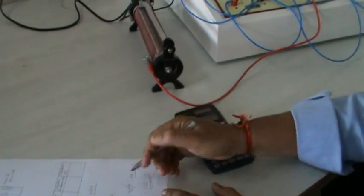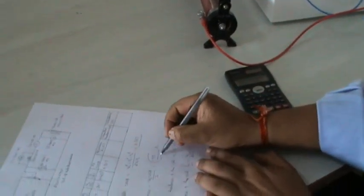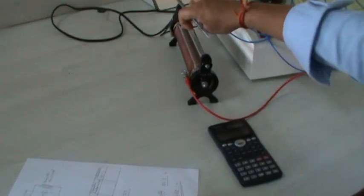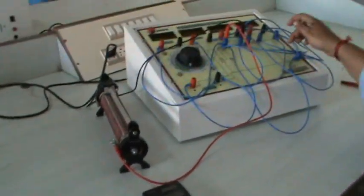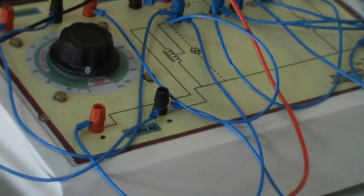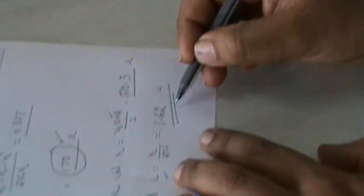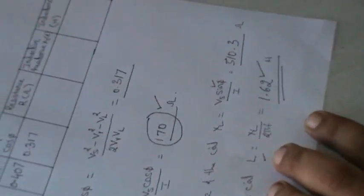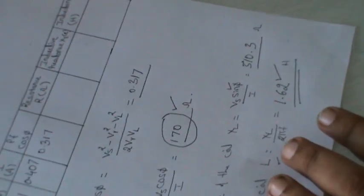That is the inductance of this coil. The resistance of the circuit is 170 ohm — that includes the resistance of the rheostat and the resistance of the Choke Coil. My final readings: resistance of the circuit is 170 ohm and inductance of the Choke Coil is 1.62 henry. Thank you.